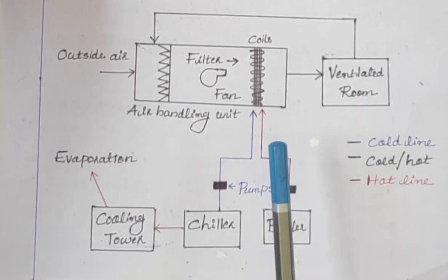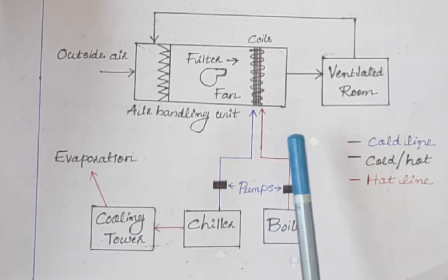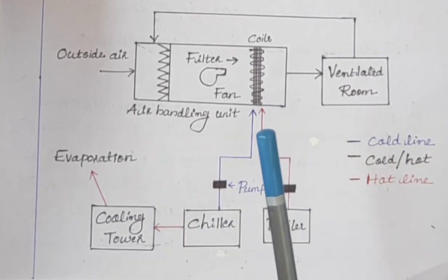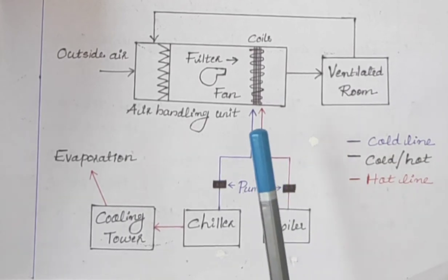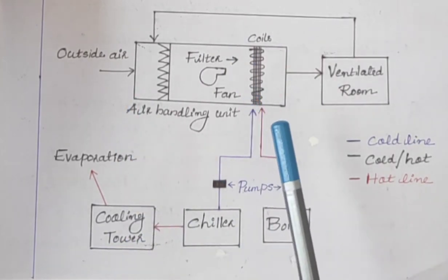HVAC system is used to condition air in a big area where a usual air conditioner cannot be used. It contains a boiler, chiller, cooling tower, and air handling unit.